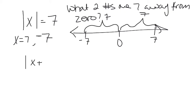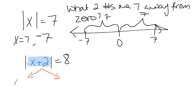As we add more terms inside the absolute value, we need a bit more work. Learning the process with easy problems prepares us for harder ones. For |x + 2| = 8, whatever is inside could equal 8 or negative 8, because both have an absolute value of 8. So we write two equations: x + 2 = 8 and x + 2 = negative 8.